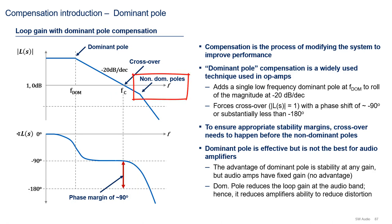Dominant pole compensation is a widely used technique in op-amp design that adds a single low-frequency dominant pole at frequency f dom to roll off the magnitude at -20 dB per decade and force crossover with a phase shift of about -90 degrees or something substantially less than -180 degrees. Note that to ensure this high phase margin, crossover needs to happen before the non-dominant poles. The dominant pole technique is effective and it works, but it's not the best for audio amplifiers. The main advantage of dominant pole is that it guarantees stability at any gain, but audio amplifiers have fixed gain, so we don't get an advantage there. Also, to achieve this guaranteed stability at any gain, dominant pole reduces the loop gain at the audio band. Hence, it reduces the amplifier's ability to reduce distortion.